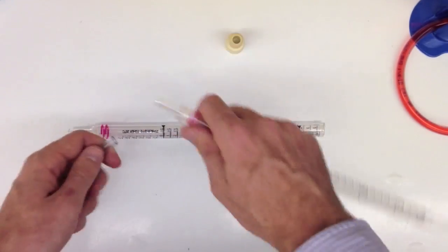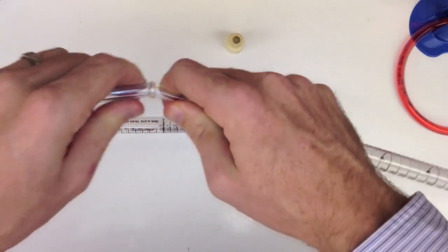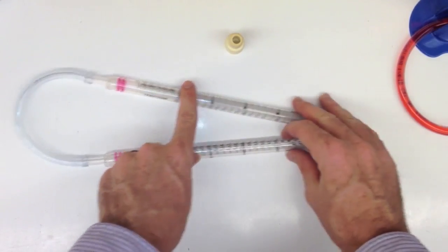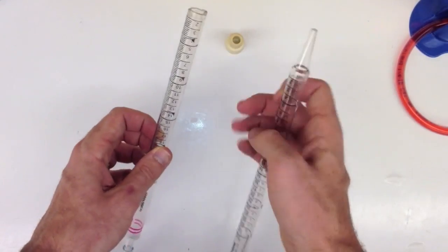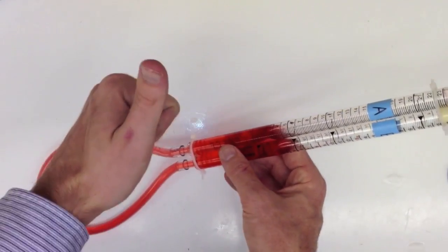Now, to make the manometer, you need to connect the tubing to each of the pipettes, or plastic tubes. Once they're connected, you'll have a U-shaped device. You can then fill it with water, add some food coloring if you like, and then plug one end to fix the pressure. There you go. You have a manometer, and you're ready to make pressure measurements.